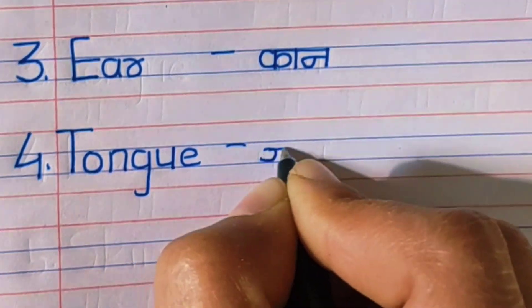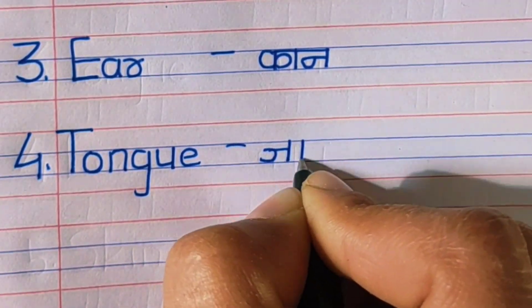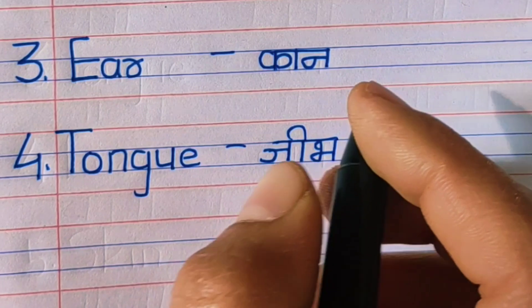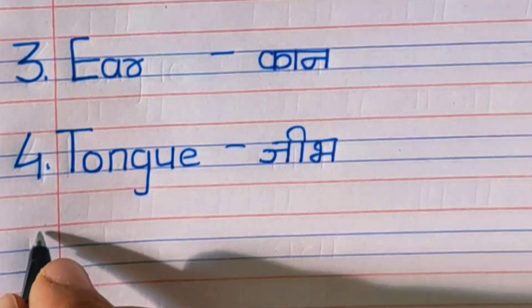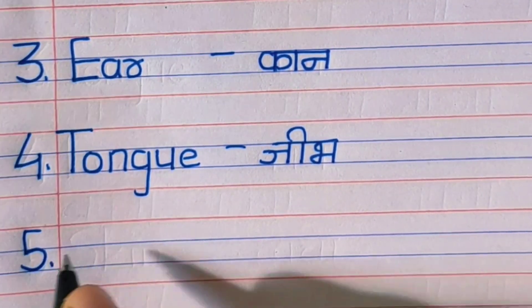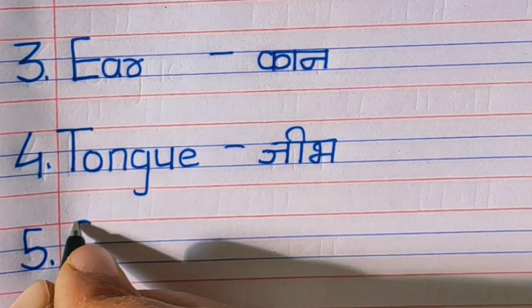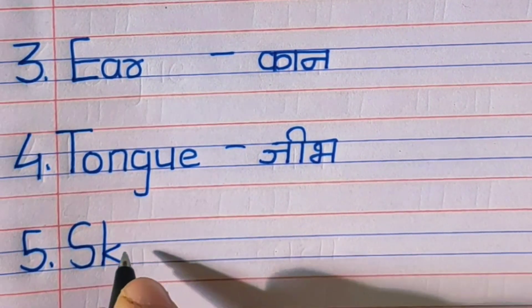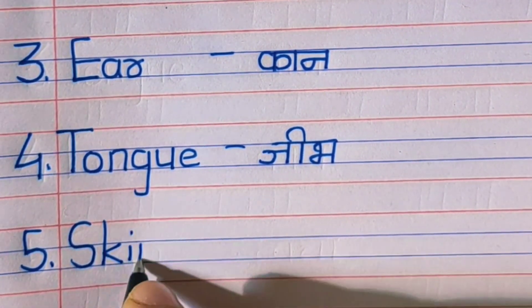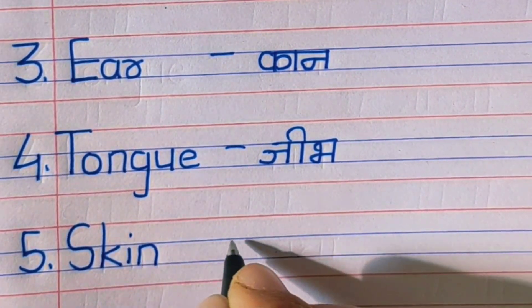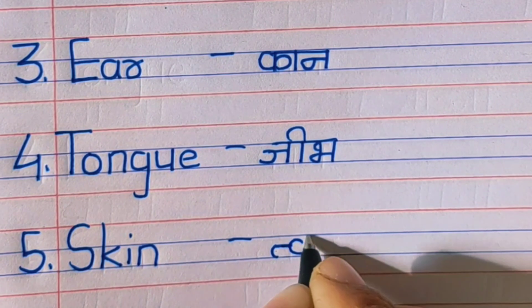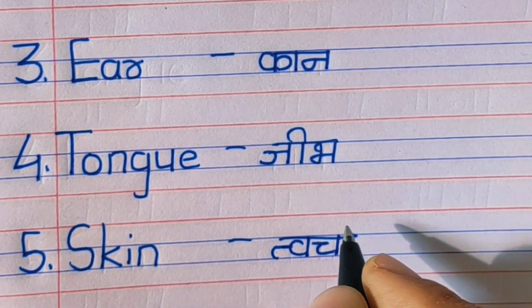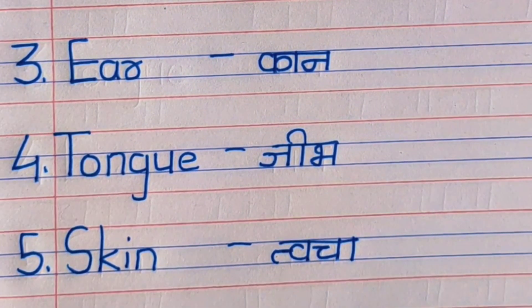Fourth: tongue, spelled T-O-N-G-U-E. Tongues help us to taste. Fifth: skin, spelled S-K-I-N. Skin, meaning twacha, helps us to feel the touch.